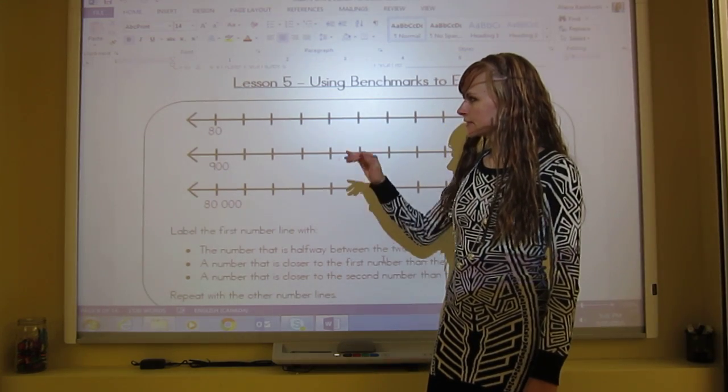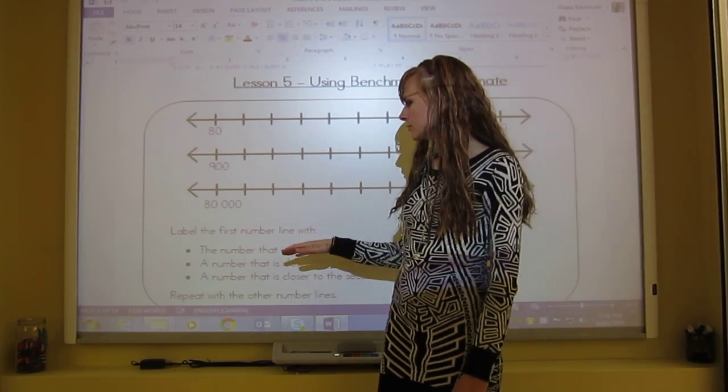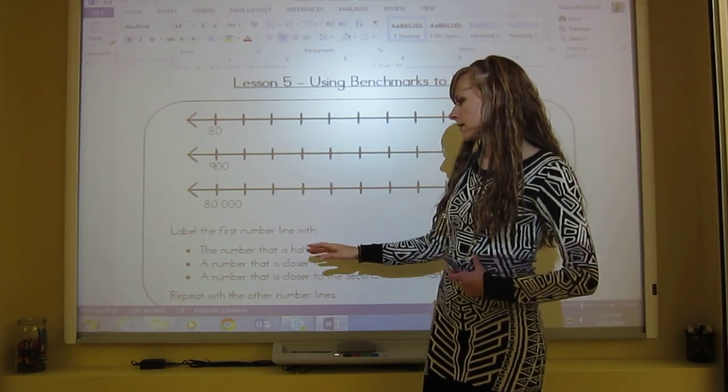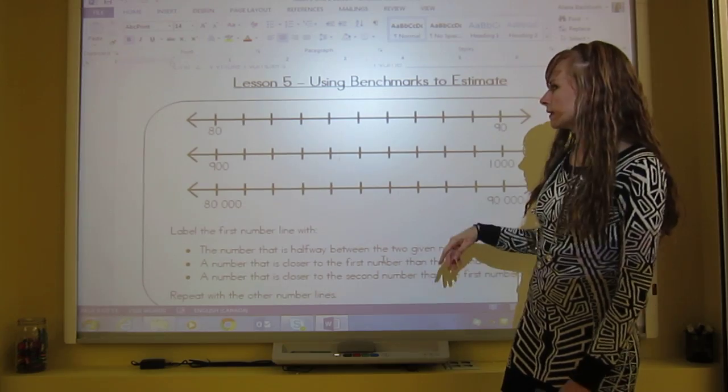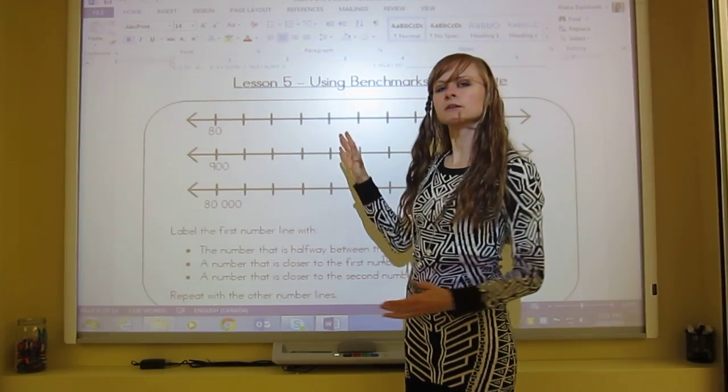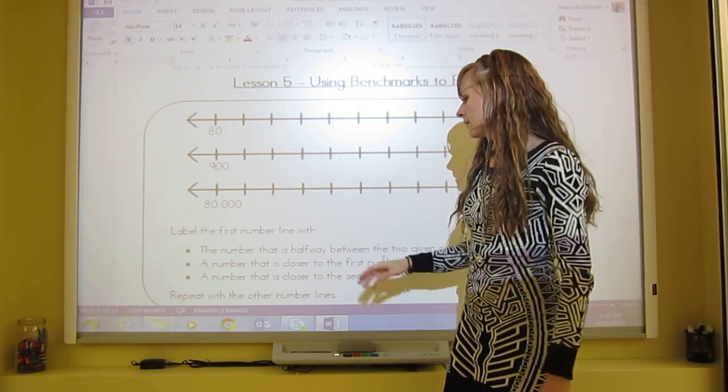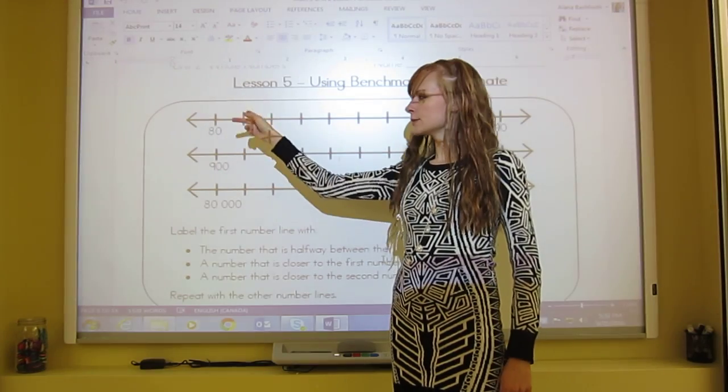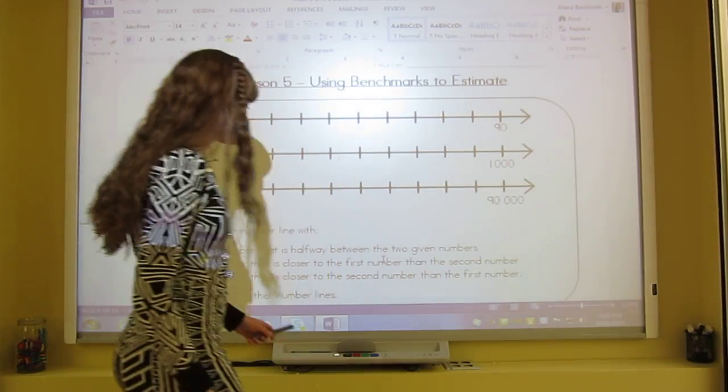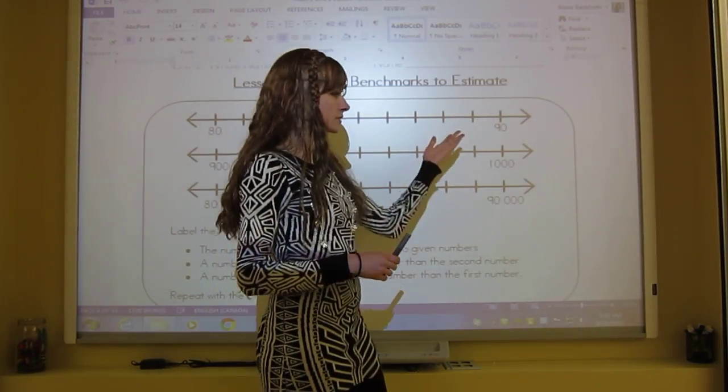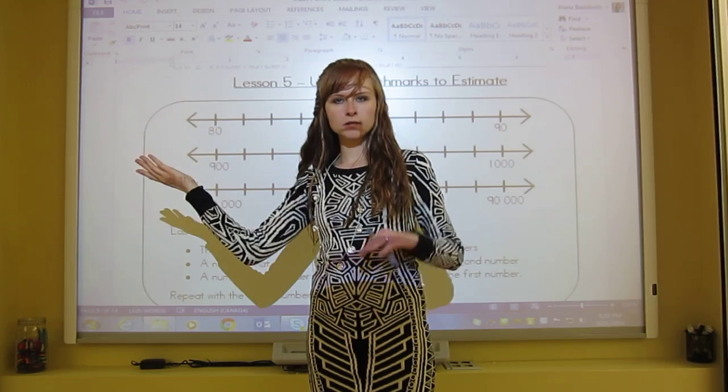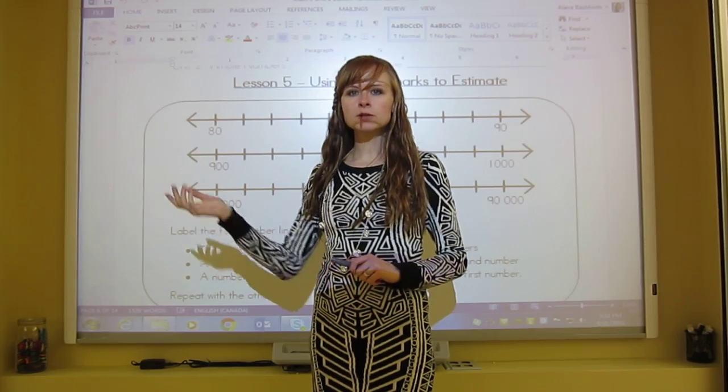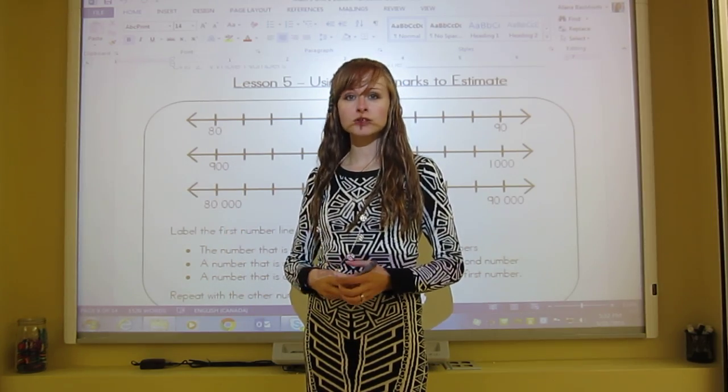For each number line, you're going to follow these three steps. Label the number line with the number that is halfway between the two given numbers. So halfway between 80 and 90 in the middle. Then a number that is closer to the first number than the second number, and a number that is closer to the second number than the first number. So you're finding the middle number and then a number that's closer over here and a number that's closer over here. These could be different numbers. Pause the video, fill out these three number lines and then play again once you're finished.